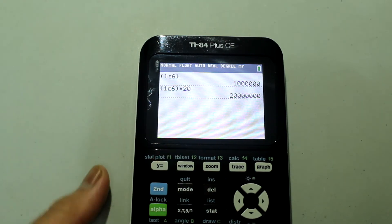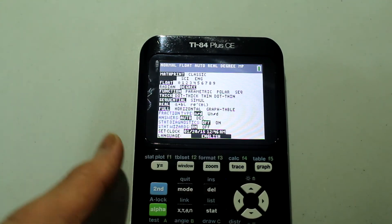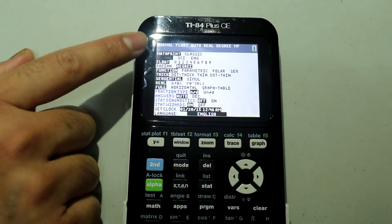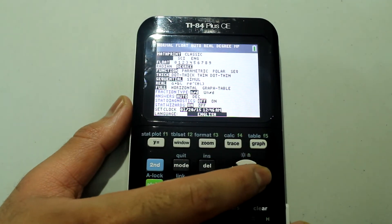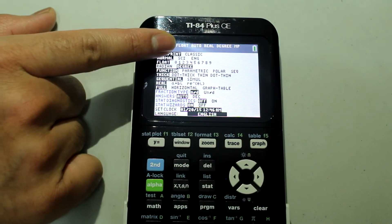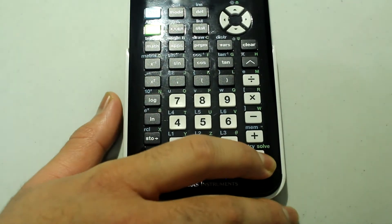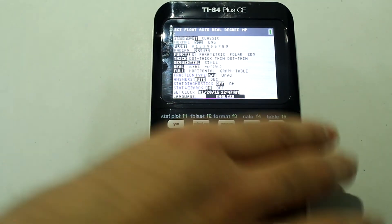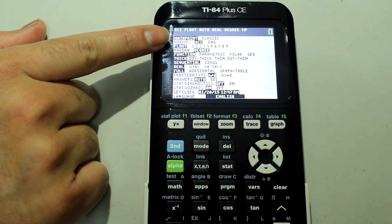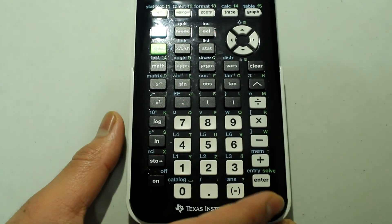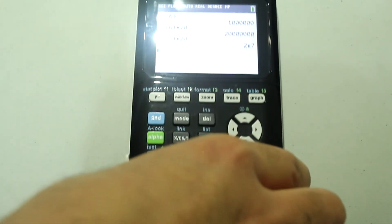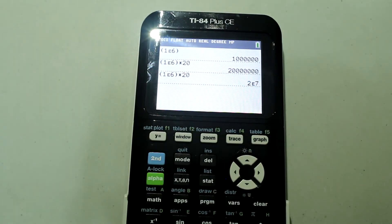In order to do that, I want to go to mode. So press the mode button. And then once the cursor is on normal, arrow down until it's on normal, and then press the right arrow until the cursor is on sci for scientific notation. And then press enter. So sci is now highlighted in black, press second mode to quit. And if you just simply press enter, it will carry out the most recent operation. So it will give twenty million in scientific notation.